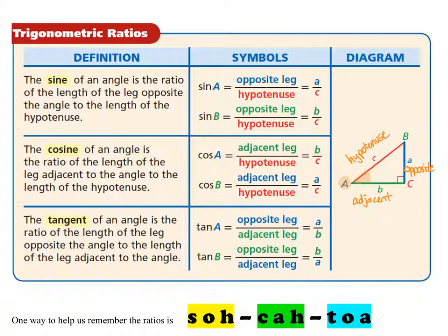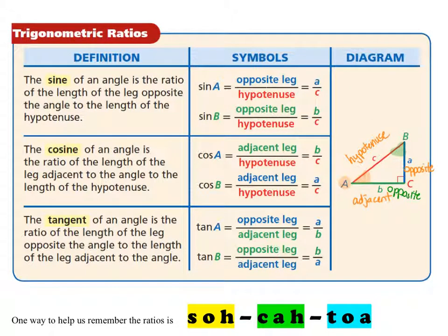Adjacent means next to. Angle A is formed by the hypotenuse and the adjacent side, side B, and it has side A opposite to angle A. If we're looking at angle B, the orientation is going to be different between the adjacent and the opposite, but the hypotenuse is still in the same place. The side opposite to angle B is side B, the hypotenuse is still the hypotenuse, and the side adjacent to angle B is side A. So whether a side is adjacent or opposite depends on which angle you're looking at.